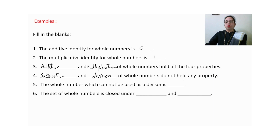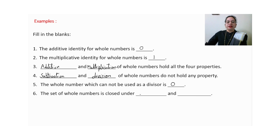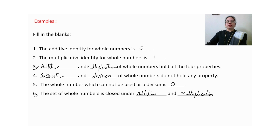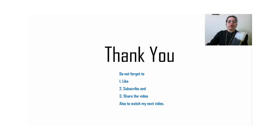The whole number that cannot be used as a divisor is zero — we cannot divide a number by zero. The set of whole numbers is closed under addition and multiplication. The meaning is the same but the way of asking the statement is different. Thank you for watching today's video — don't forget to like, subscribe, and share, and watch my next video.